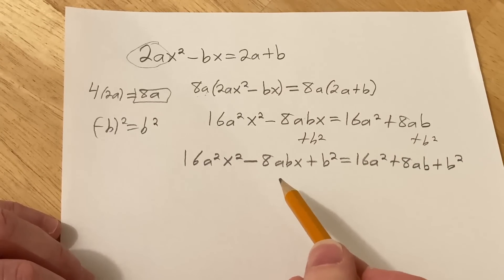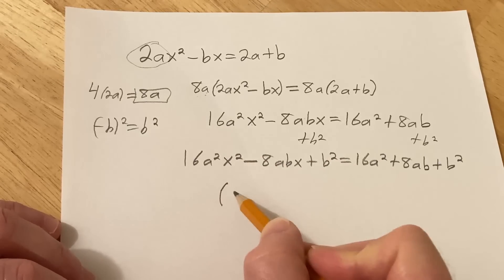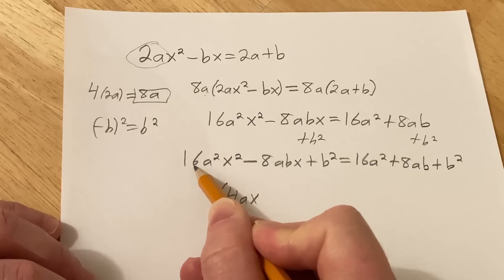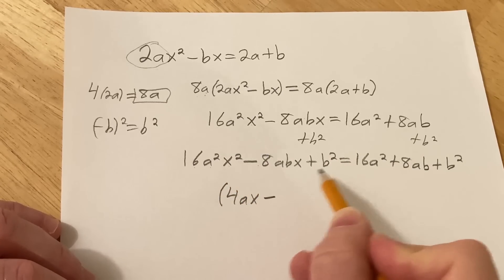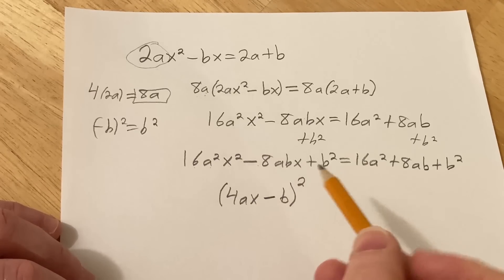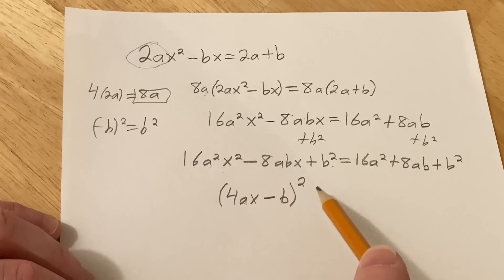And this should be a perfect square trinomial. That means we basically can do this. This will be 4ax. You just take the square root. And then minus b. Square this, you get this. Square this, you get this. Multiply these and double them and you should get this. Negative 4abx times 2 is negative 8abx. Perfect.